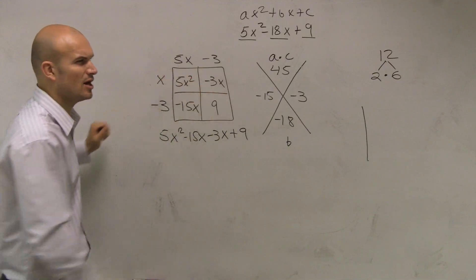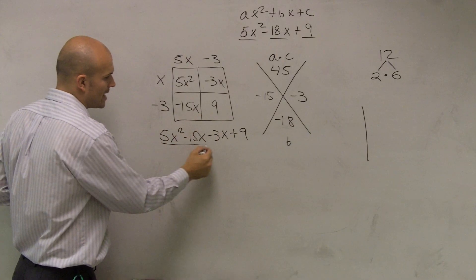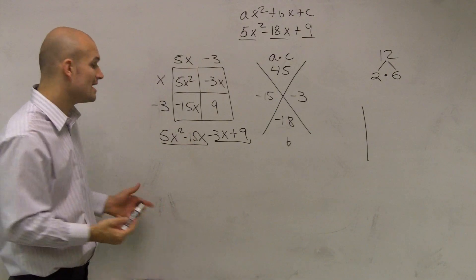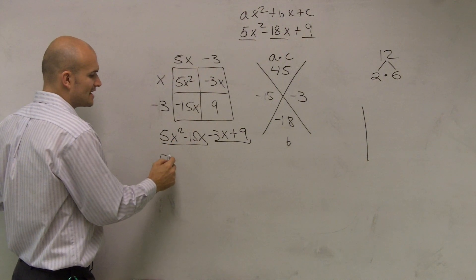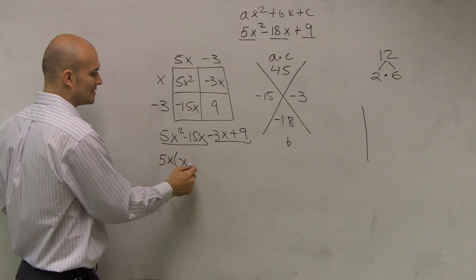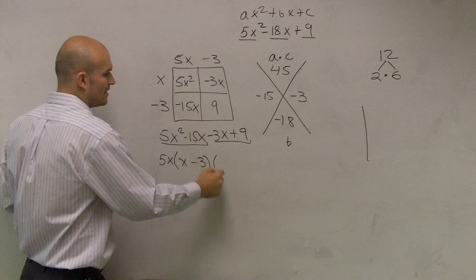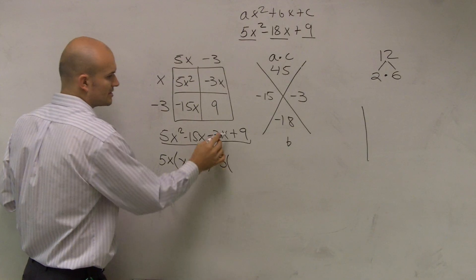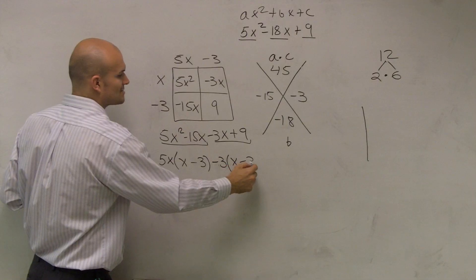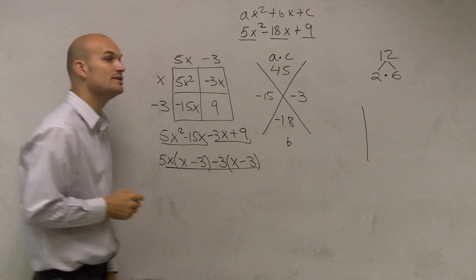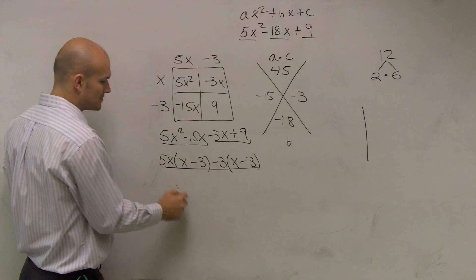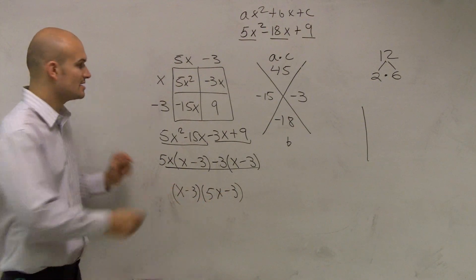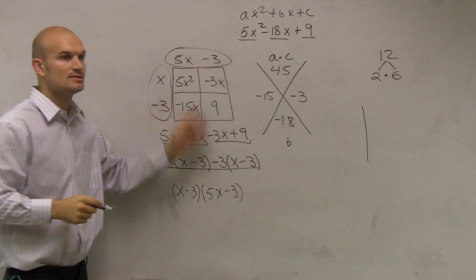If the area/box method doesn't make sense, you can also just write it all the way out and factor by grouping. What do 5x² and negative 15x share? They share a 5 and an x in common. So I can divide out a 5x, leaving me with x minus 3. Then here I can factor out a negative 3 from negative 3x and positive 9, which also leaves me with x minus 3. Now I look at the whole expression — they share an x minus 3 — so I factor out an x minus 3 and obtain 5x minus 3. The answer is (x - 3)(5x - 3) — the exact same answer both ways.